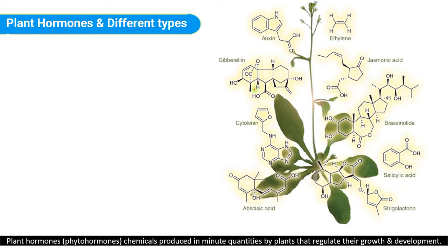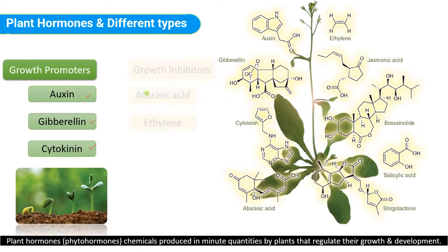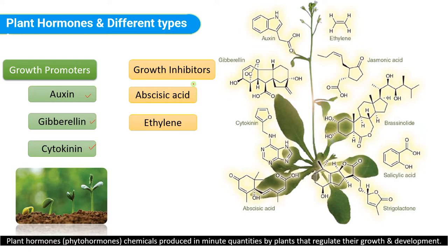Plant hormones, just like animal hormones, are chemicals produced in minor quantities by plants that regulate their growth and development. They are broadly classified into growth promoters and growth inhibitors. Growth promoters — including auxin, gibberellin, and cytokinin — are involved in cell division and differentiation. Growth inhibitors, such as abscisic acid and ethylene, are involved in abscission, senescence, and natural detachment of ripened leaves and fruits. Abscisic acid is called the stress hormone, while ethylene is called the ripening or senescence hormone.